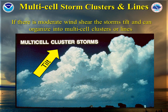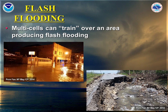Moving on to multi-cell storms and lines, there is moderate wind shear in these storms, and this can cause the storms to tilt slightly. Multi-cells which train or move over the same area again and again can produce flash flooding.